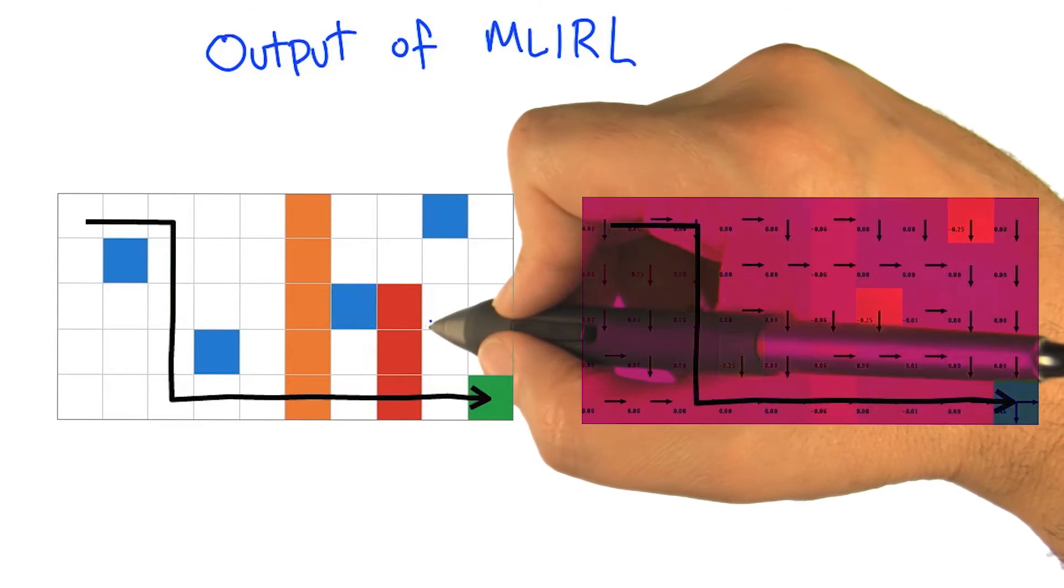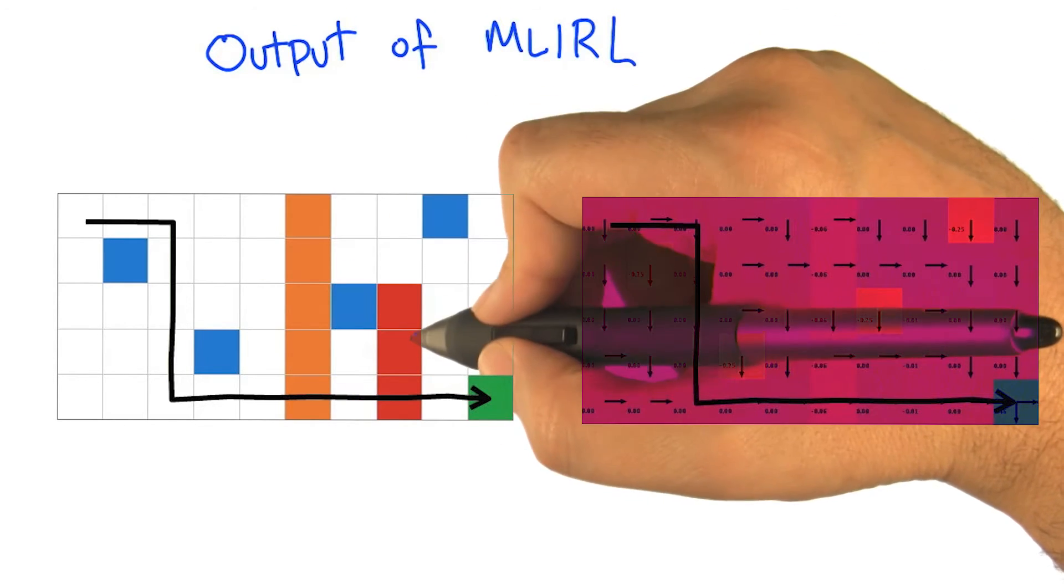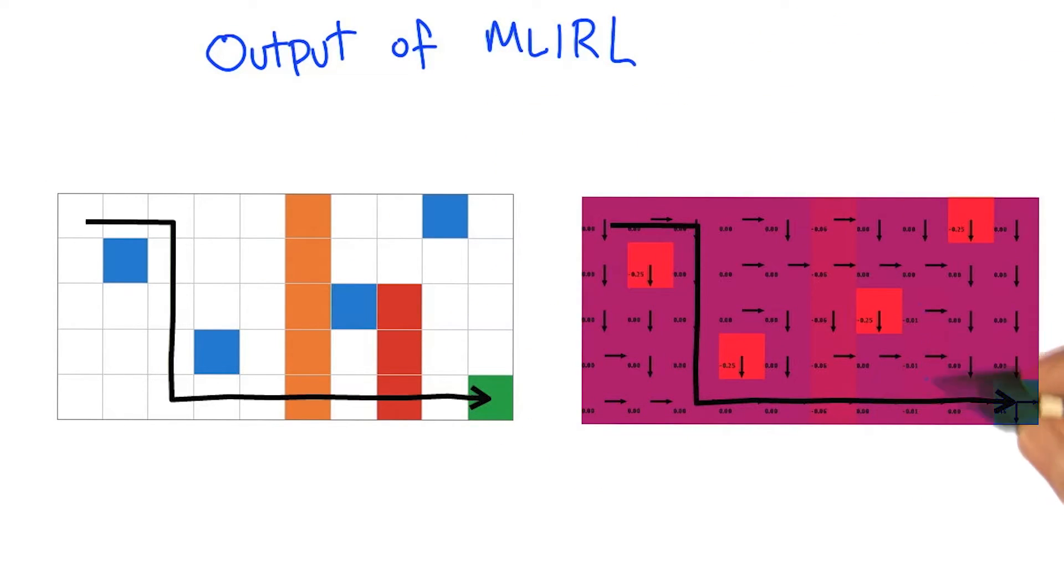One of the things that's interesting is, as we talked about, there's no sort of evidence in this trajectory that red is good or bad. And in fact, it ends up getting pretty much the same reward as the background, basically zero.